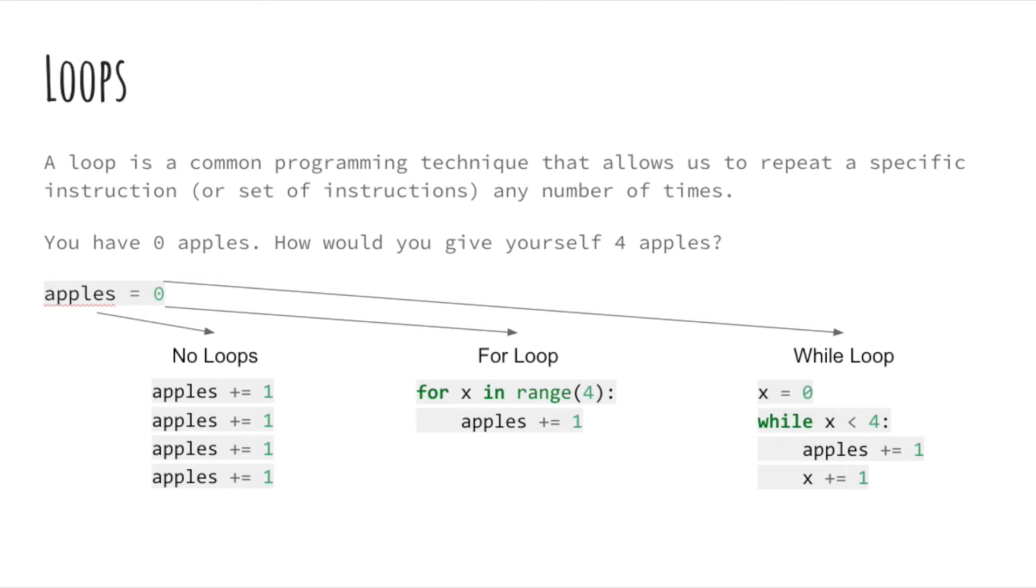As we can see here in an example, if you have zero apples and you want four apples, while loops can be used and come to the rescue.